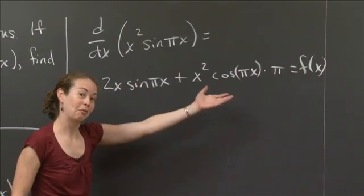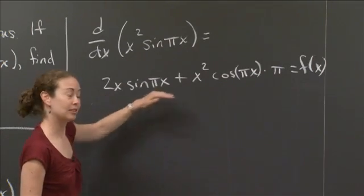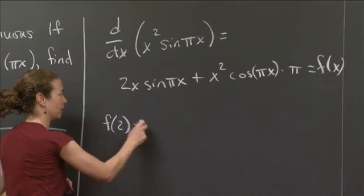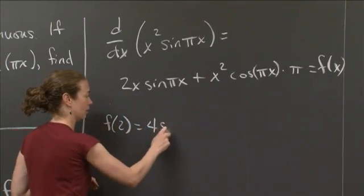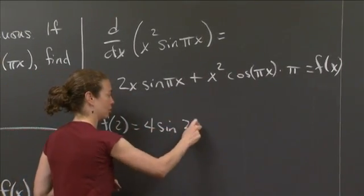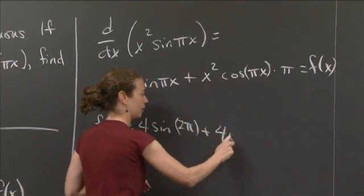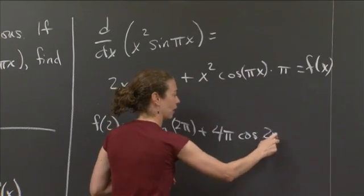So if I want to find f of 2, all I have to do is evaluate this at x equal 2. So f of 2 is going to equal 2 times 2 is 4, sine 2 pi, plus 4. I'll bring the pi in front, 4 pi cosine 2 pi.